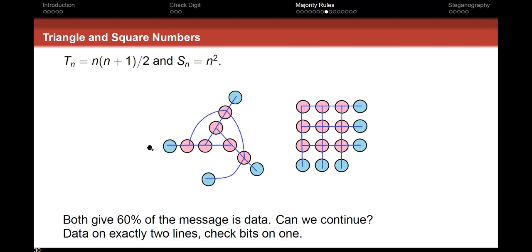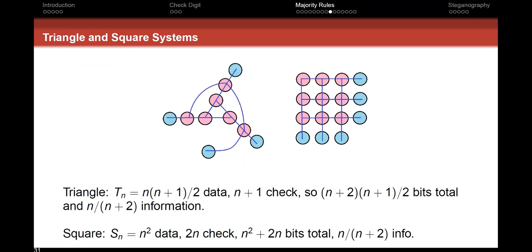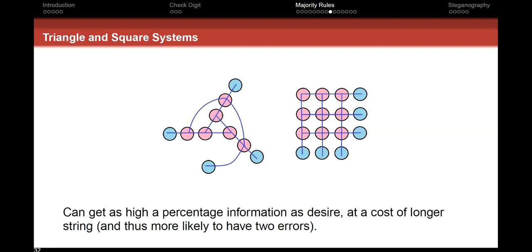There's a better way with the triangle: take the check-digit points and make them data, extend those lines, and draw a new line through what was the check digit — and keep going. We have a formula: the nth triangle number is n(n+1)/2, and the total bits that become information is n over n+2. The square gives you the same ratio but takes more points. You can get as high a percentage as you want, but at the cost of more digits, making multiple errors more likely.